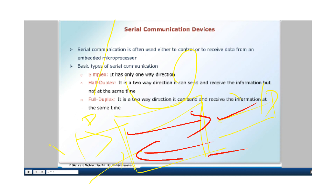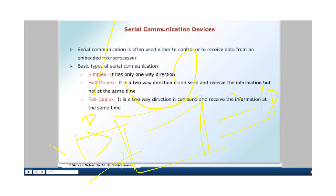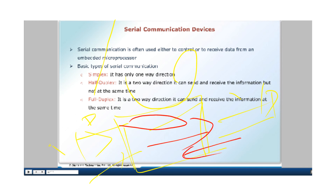Full duplex means it is a two-way direction — it can send or receive information at the same time. In half duplex we cannot send and receive data simultaneously, but this is possible in full duplex. We can send or receive data at the same time in full duplex.